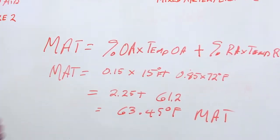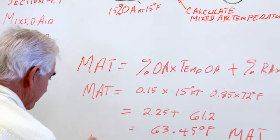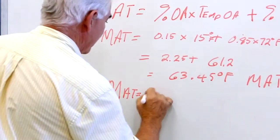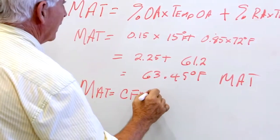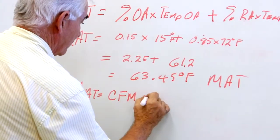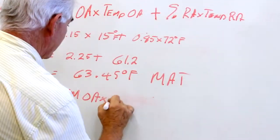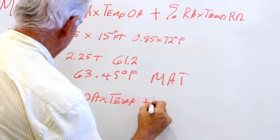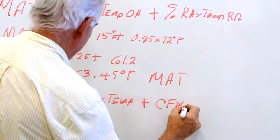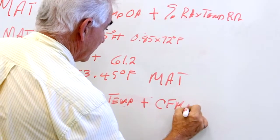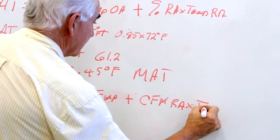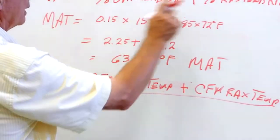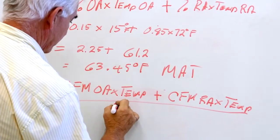The other equation that we might use is the mixed air temperature equals the CFM of outdoor air times the temperature plus the CFM of return air times the temperature, divided by the total mixed air CFM.